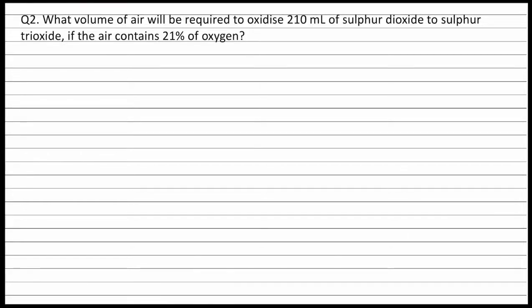Question 2. What volume of air will be required to oxidize 210 ml of sulfur dioxide to sulfur trioxide if the air contains 21% of oxygen?